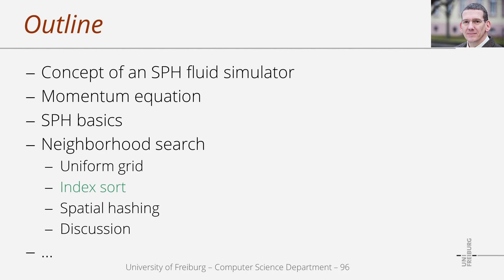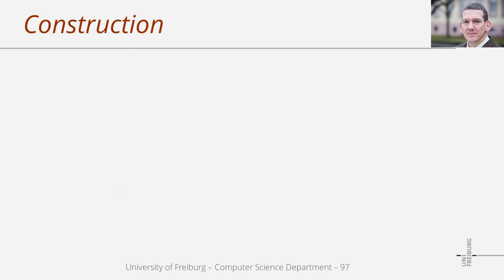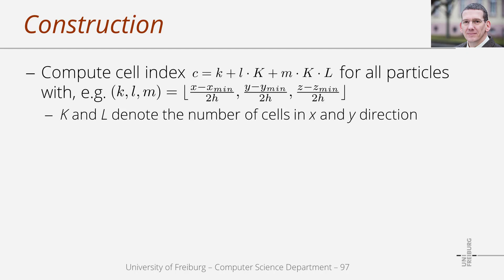The uniform grid is just a concept, and there exist numerous ways to implement it. Here I'm going to focus on two different classes of implementations based on sorting and on hashing. Within these classes I will discuss selected variants. The general idea of index sorting is to compute cell indices for all particles and sort the particles with respect to the cell index — that's why this class is referred to as index sorting. We generally start with a virtual uniform grid where we can compute a unique identifier or index for all cells.